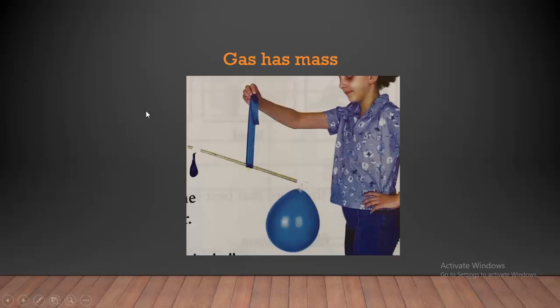And we can also measure the mass of gases. But how can we measure the mass of gases? We can blow up a balloon on one end of a rod and attach another similar but deflated balloon to the other end. Have a look here — this balloon is full of air, so its mass is heavier than this one, which has no air. So this one goes down to the ground because it is heavier.